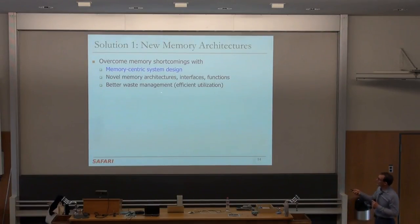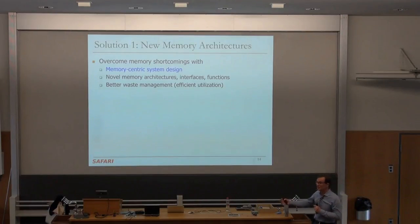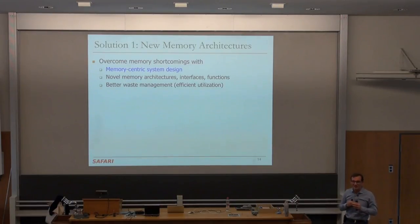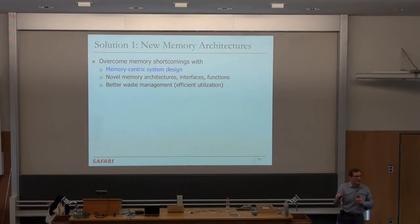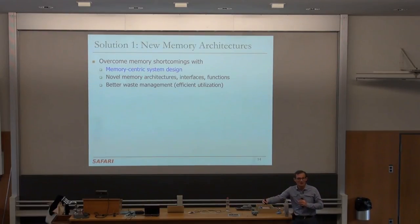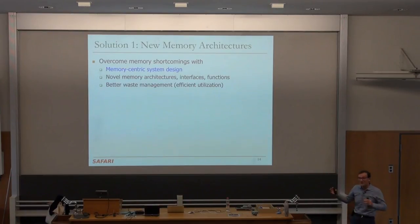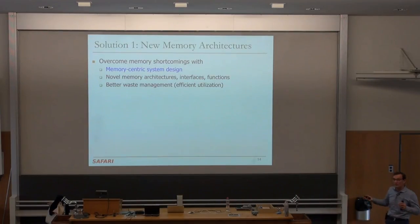We're going to talk about better waste management, more efficient utilization of memory. When we talk about latency tomorrow, we will see that a lot of the latency is wasted, because even though the memory can respond to data much faster, we're specifying the latencies to cover for the worst case. For example, today DRAM latencies are specified such that the memory operates correctly at 85 degrees Celsius. But if you're really operating memory at a much lower temperature, you can access memory much faster. You don't need to wait that long.